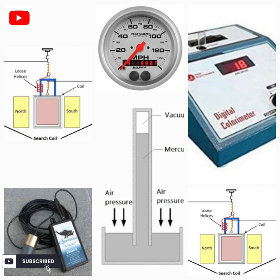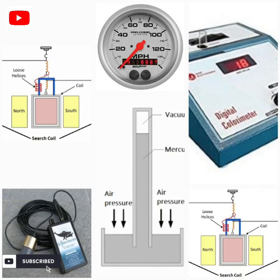The dynamo converts mechanical energy into electrical energy. The dynamometer measures electrical power. The electrometer measures very small potential differences in electric currents. The electroscope detects the presence of an electric charge. The endoscope is used to examine internal parts of the body.